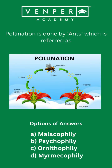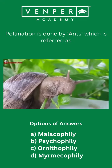Pollination is defined as the transfer of pollen from the male part of the flower to the female part of the flower, which is carried out by biotic and abiotic agents.